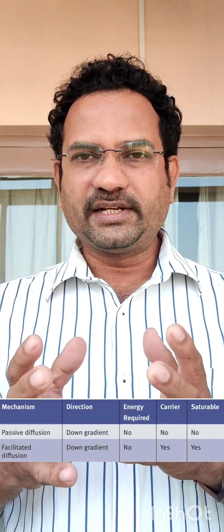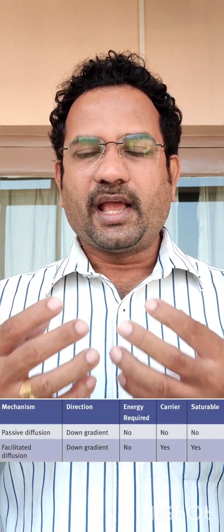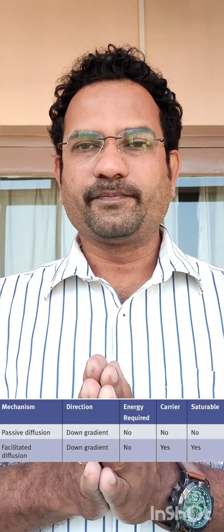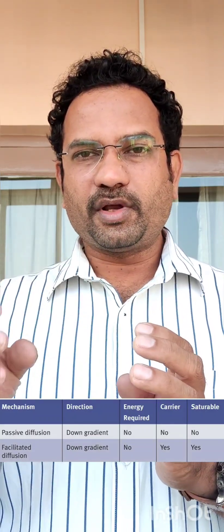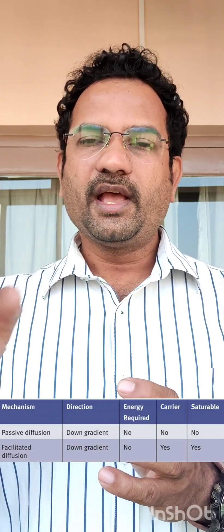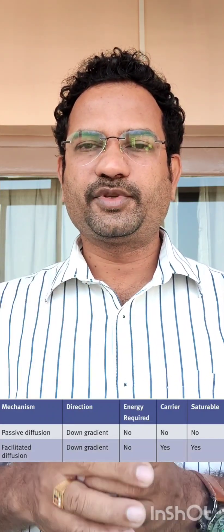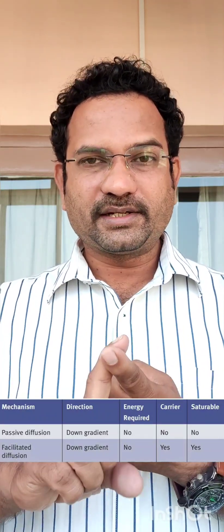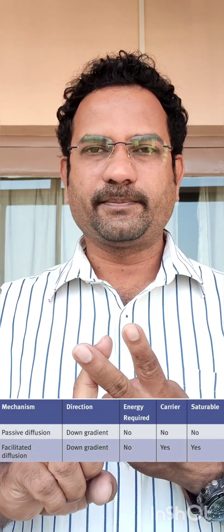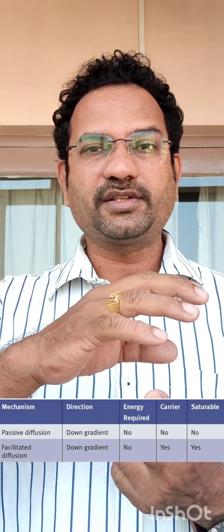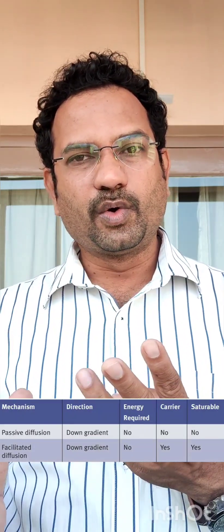The second method is known as facilitated absorption. Facilitated means it is being helped by a particular protein. That protein or carrier molecule facilitates the absorption of the drug molecules, hence it is known as facilitated absorption. So it requires a carrier. Does it require energy? No, it doesn't require energy. Absorption occurs again down the gradient, from high concentration to lower concentration.